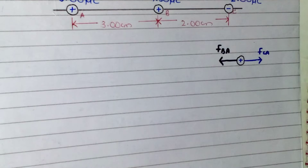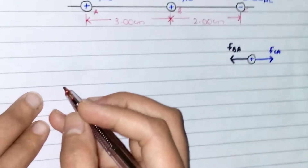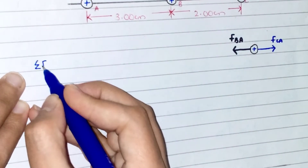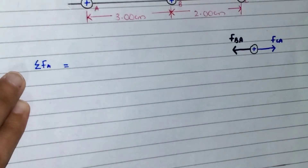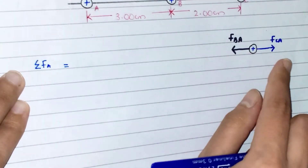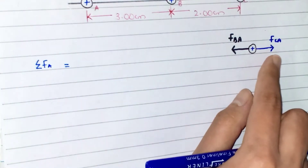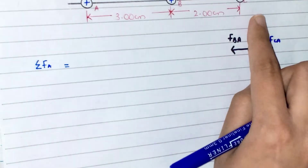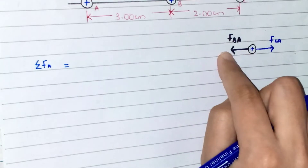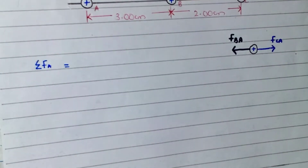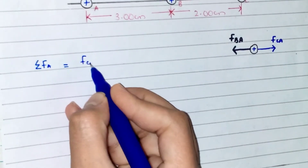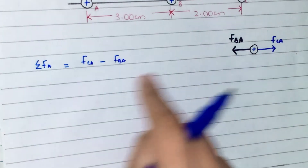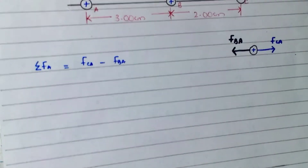Since these are Coulomb forces, we apply Coulomb's law along the x-axis only — there is no y-axis component. The sum of forces on charge A equals F_CA minus F_BA. F_CA is positive because charge C attracts A in the positive x-direction, while F_BA is negative because the repulsion from B pushes A in the negative x-direction.